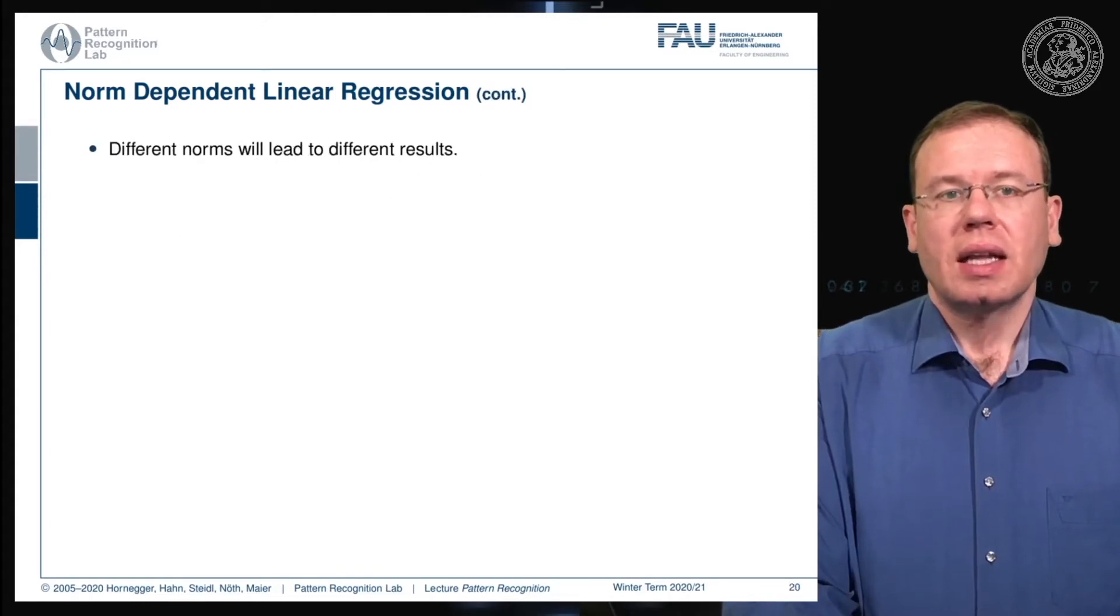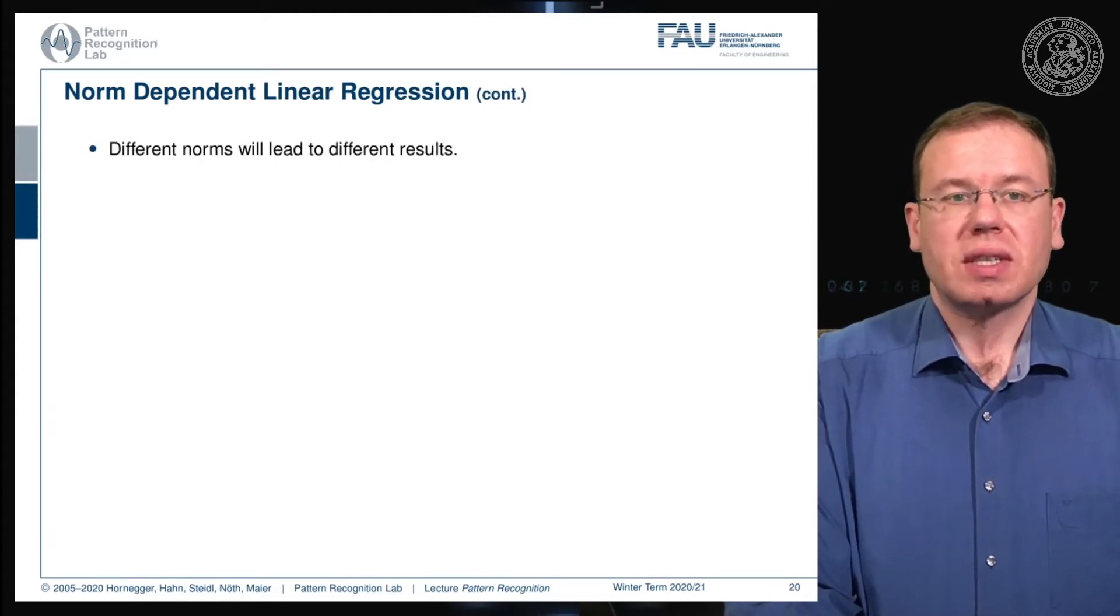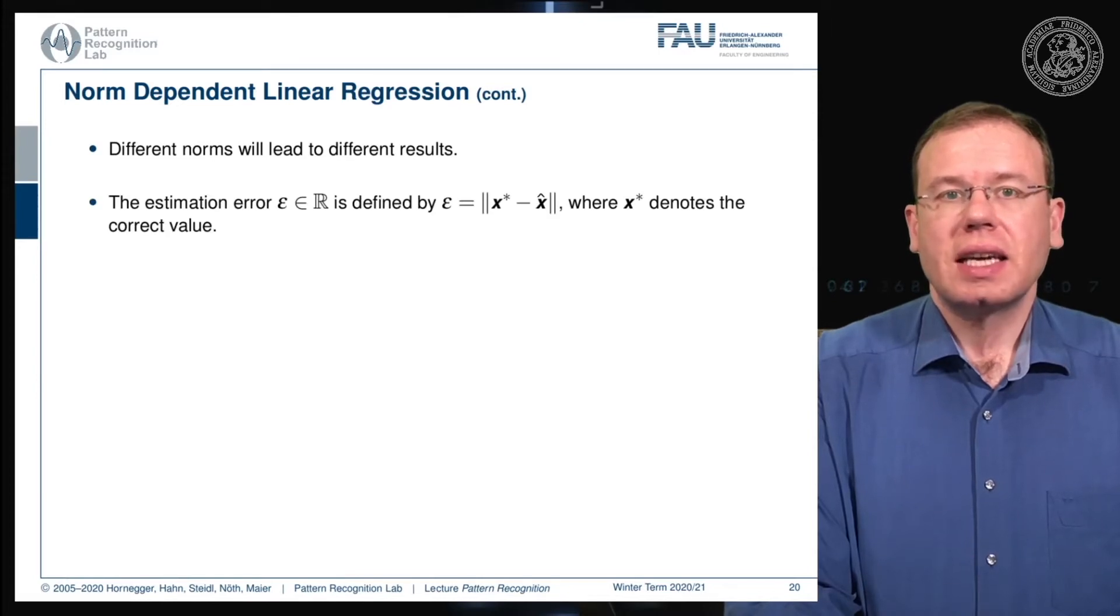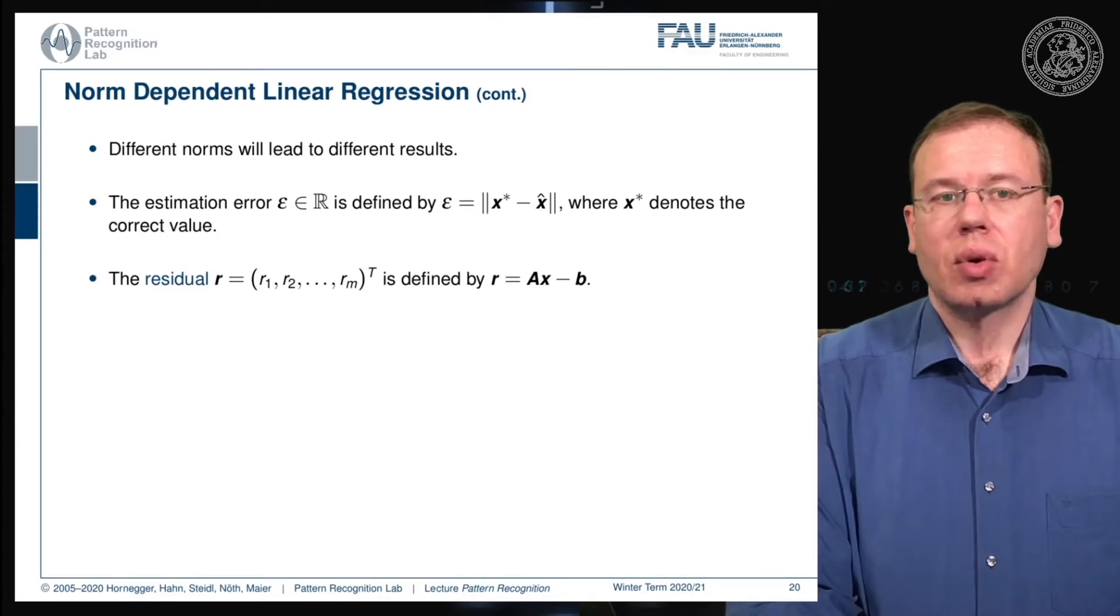Different norms will lead to different results. The estimation error epsilon, a scalar value, can be defined as the difference between the optimal regression result and x star which denotes the correct value. This gives rise to a residual r1, r2 up to rm where m is the number of observations. They can be computed as the element-wise deviations from our regression problem.